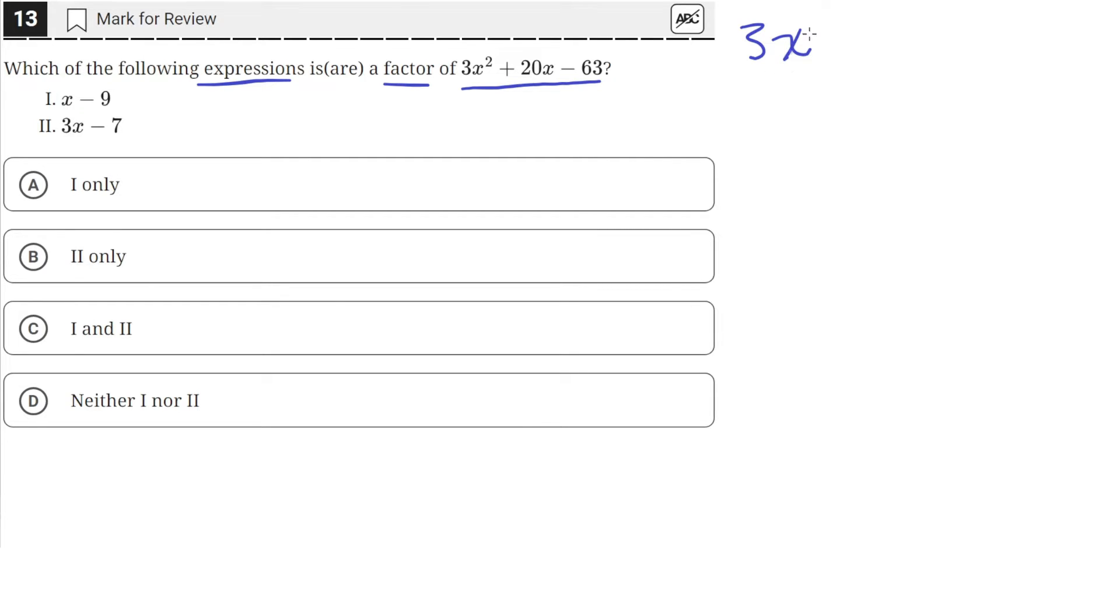So we have this quadratic here: 3x squared plus 20x minus 63, and we need to factor this.